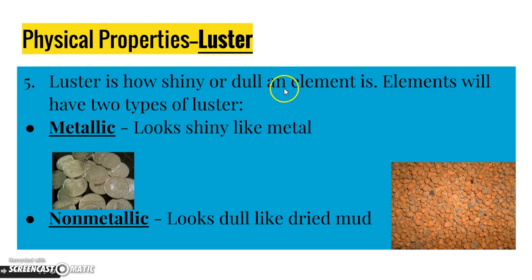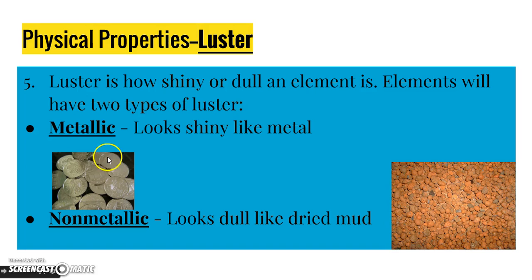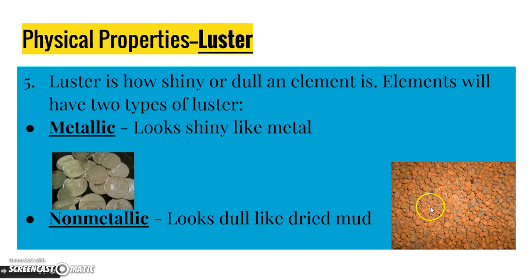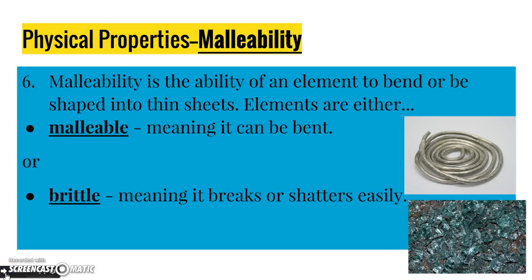Luster is how shiny or dull an element is. Elements have two types of luster: they're either metallic, which means they look shiny like metal — like these coins right here — or they're non-metallic, which means they look dull, kind of like dried mud. That's number five on your homework.